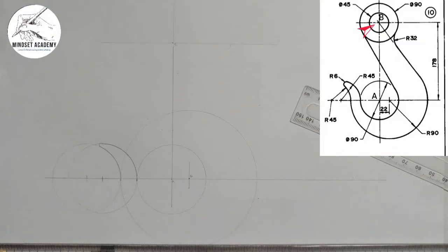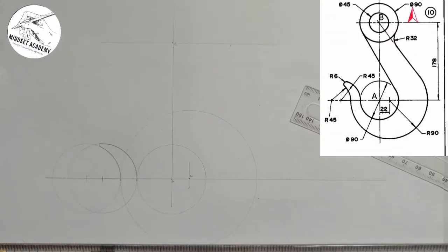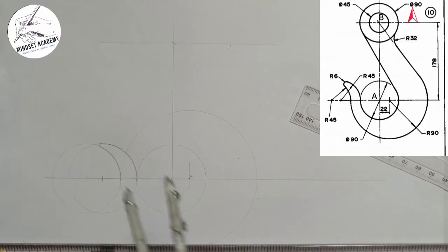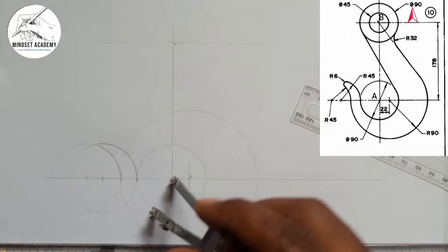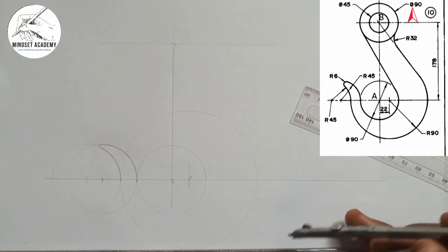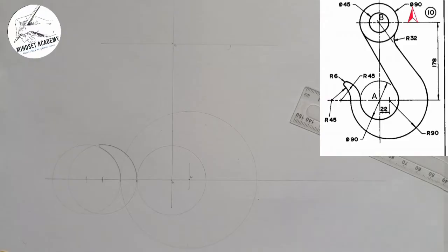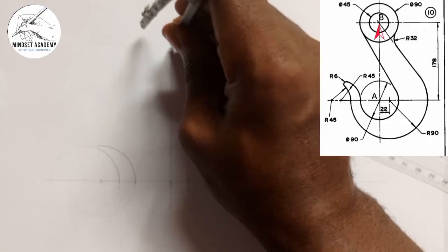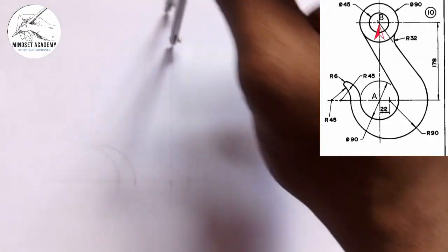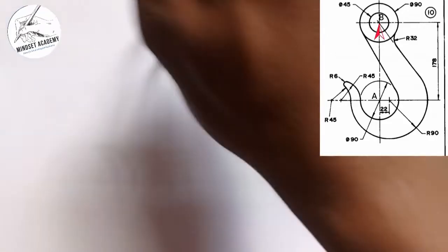At the top here is another circle given with a diameter of 90 — but since we're using half of the dimension, half of it gives us 22.5. Similarly, it's the same dimension as before: measure 22.5 on the meter rule and place it at point B.